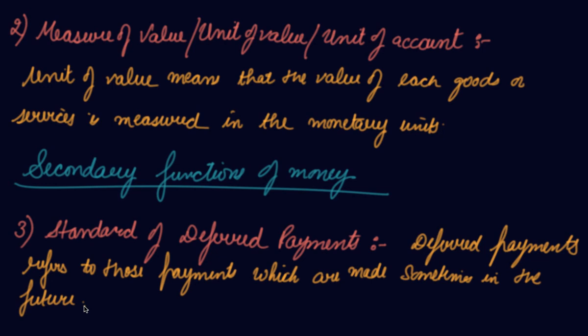Money has made deferred payments much easier than before. When we borrow money from somebody, we have to return both the principal as well as the interest amount. It is difficult to make transactions in terms of goods and services — imagine doing this in the barter system. We take a loan and pay the principal amount and the interest in terms of money in the future. So money has given rise to a standard of deferred payments.